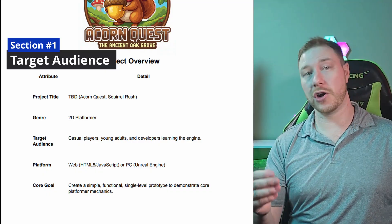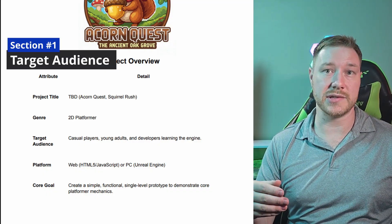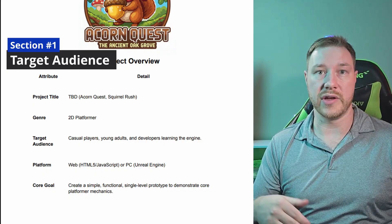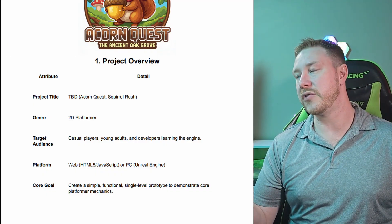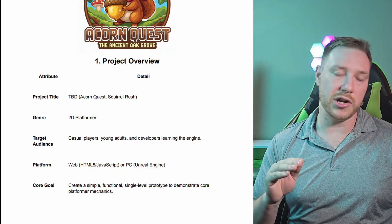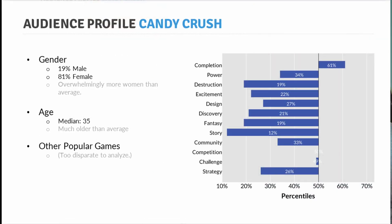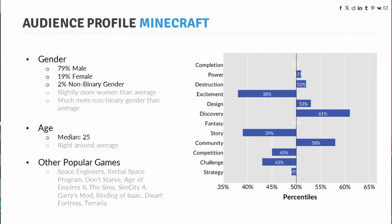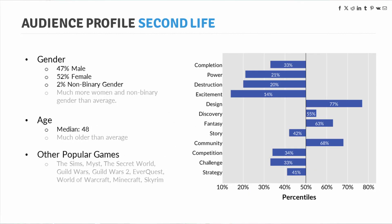Next up is the target audience. For our game design document, we target casual players, young adults, and developers learning the engine. Everybody thinks the target audience is for everybody, but that's just not true. You need to know what your demographic is so you can make important decisions. There are different types of players — age, gender, culture, etc. — and they will all play a factor into the design of your game.